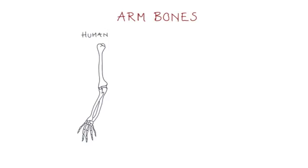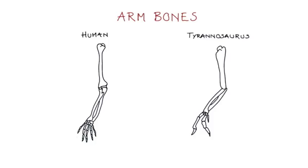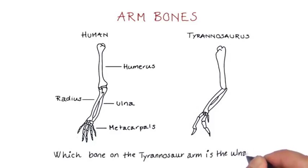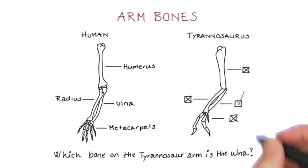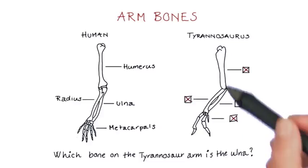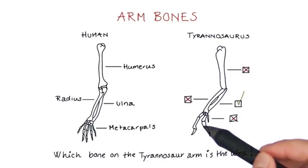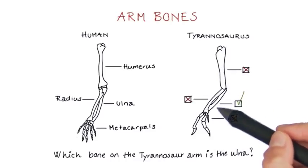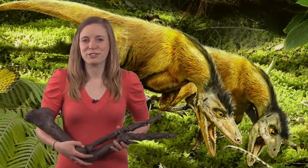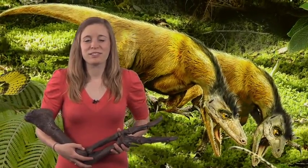The bones of different animals may take different shapes, but the same kinds of bones will be present. For example, here we have a human and a Tyrannosaurus arm. The main bones of the human arm are labeled. Which bone on the Tyrannosaurus arm is the ulna? The same arm bones are present in both humans and Tyrannosaurus. The Tyrannosaurus arm is much bigger, and it only has two main fingers compared to our five. But the underlying structures of the humerus, radius and ulna, and metacarpals are shared. Although dinosaurs and mammals are not closely related, a human arm has the same bones as those of a Tyrannosaur.